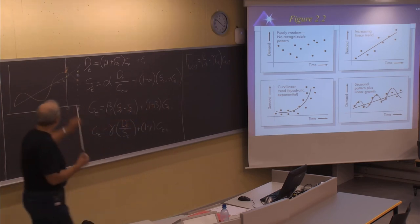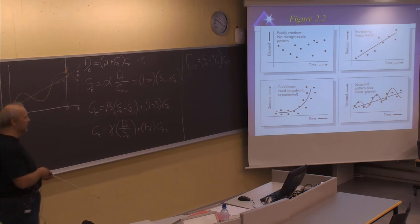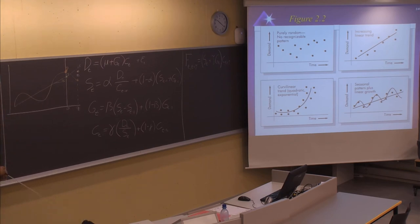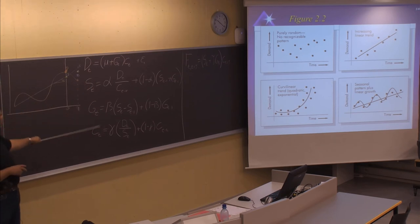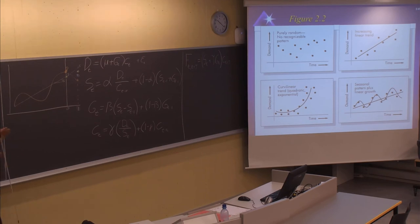Now we know about all these formulas, but to get started we need some initial values. We need to know the S value, the G value, and all the C values — because you will have one seasonal factor for each period in what the books call the full season, which is usually the full year.